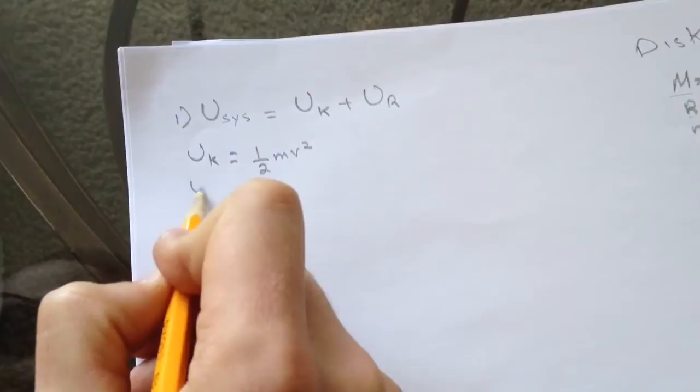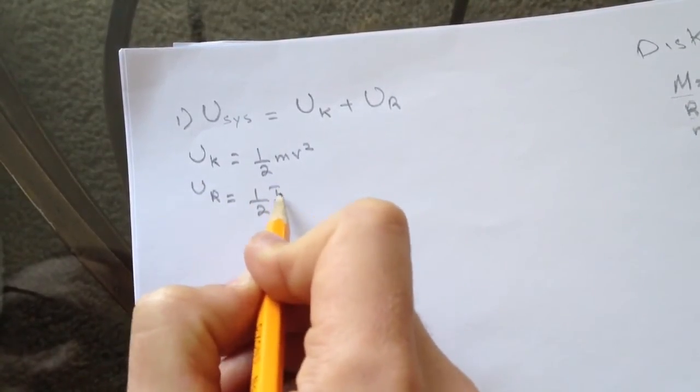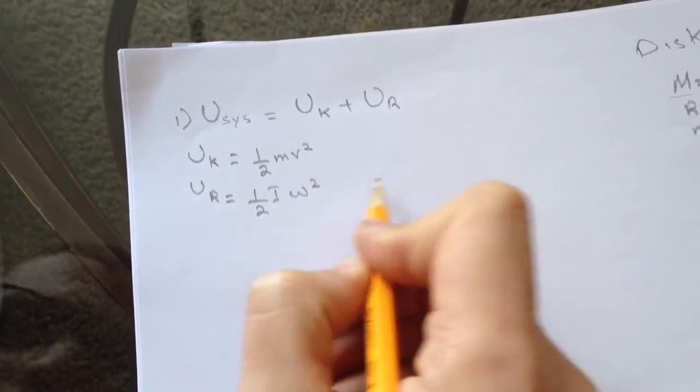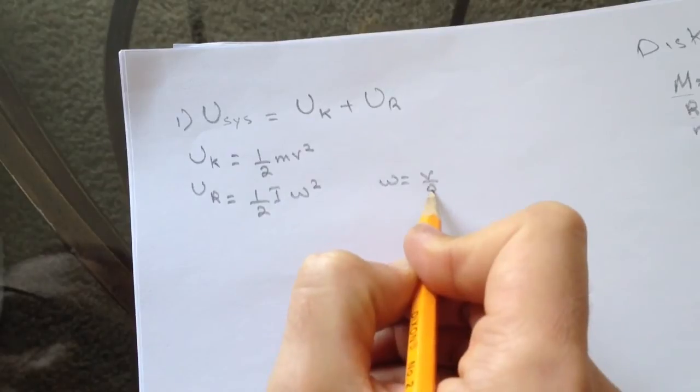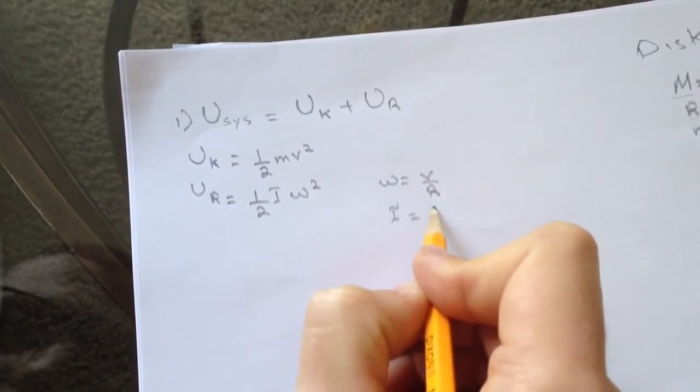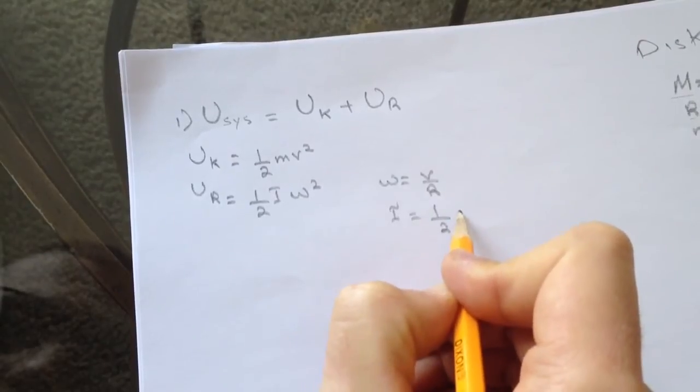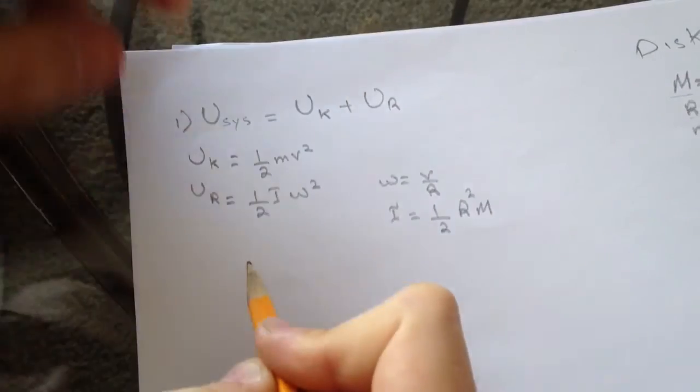U_R equals half I omega squared. We can change the omega to v over r, and the inertia for the disc is half Mr squared.